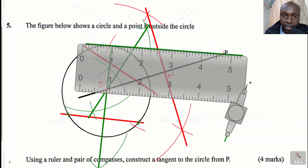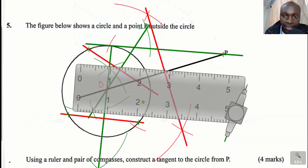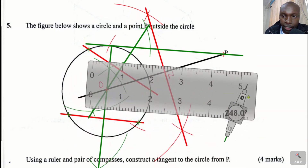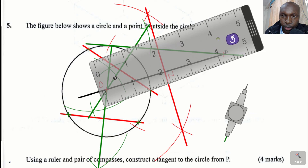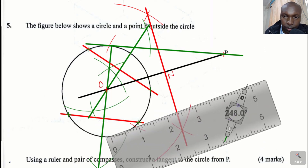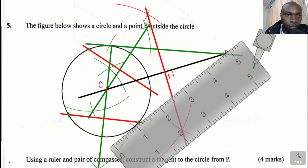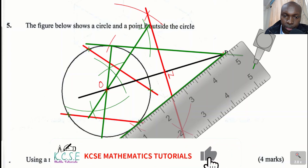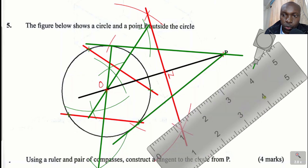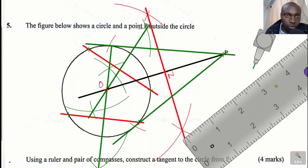That is the required tangent. Then on the other side you do the same thing. Join P to this point where the other arc was made using a straight line. Now you have constructed two tangents from P to the circle.